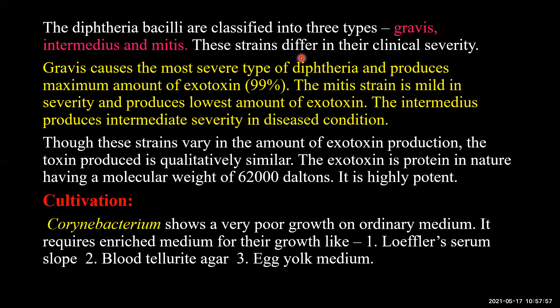The diphtheria bacilli are classified into three types: gravis, intermedius, and mitis. These three strains produce the same exotoxin but differ in their clinical severity. The gravis strain causes the most severe type of diphtheria and produces the maximum amount of exotoxin, around 99 percent. The mitis strain causes mild severity and produces the lowest amount of exotoxin.